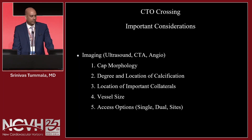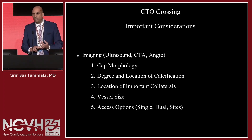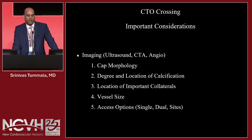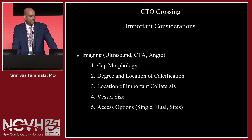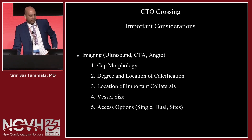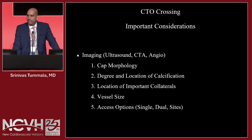The location of collaterals is important — you don't want to burn collaterals that are important for runoff. Vessel size makes a difference; if you're trying to recanalize from a larger vessel into a smaller one that's one or two millimeters in diameter, that's a very tough recanalization. And then access options — single, dual — and where are your points of access, whether radial, etc.